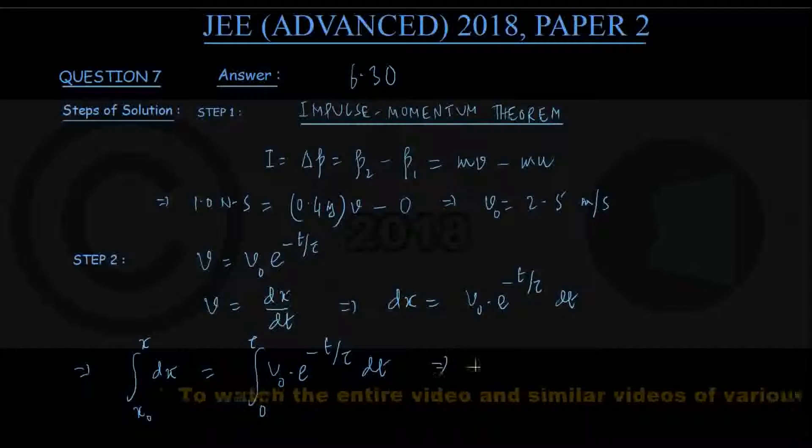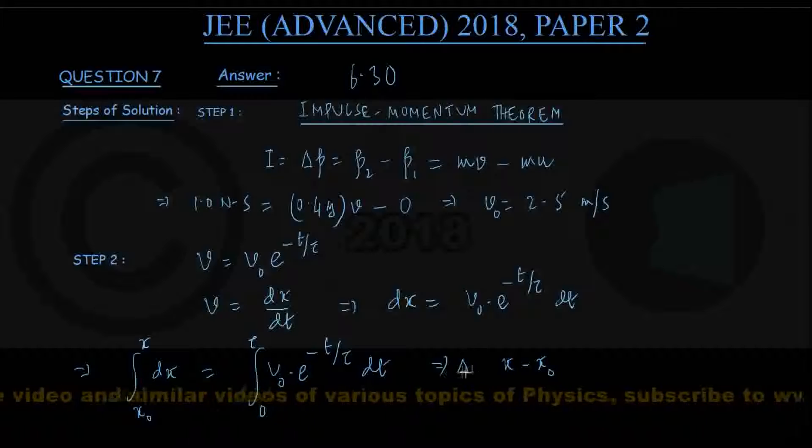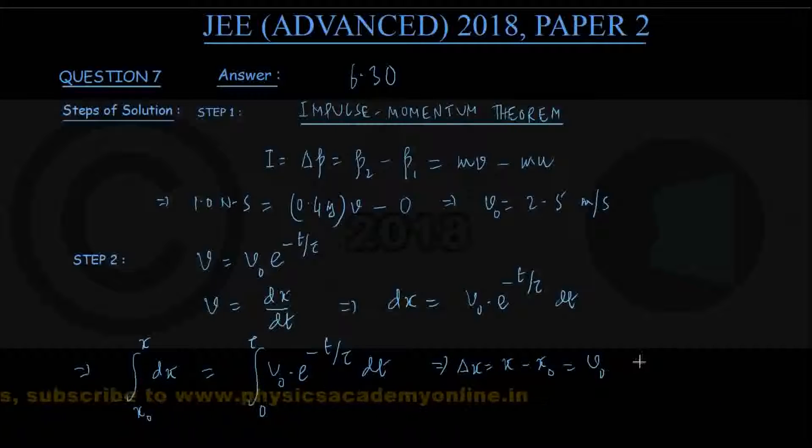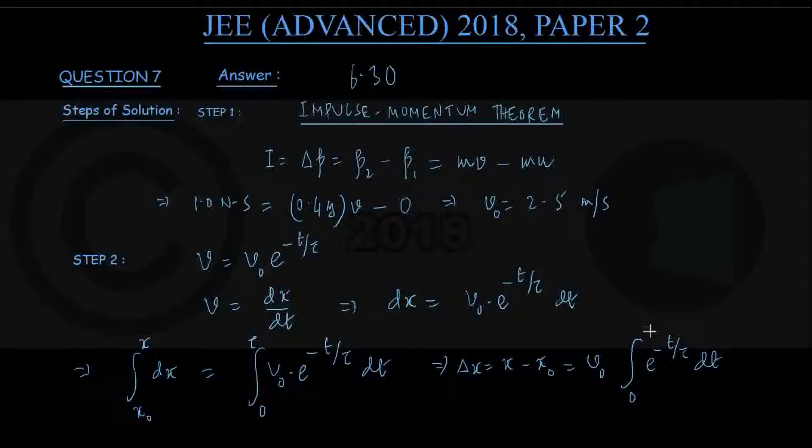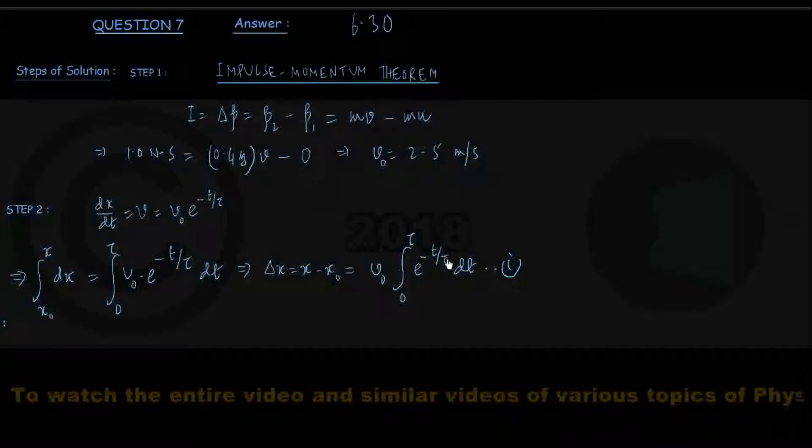As we integrate, left hand side coming out to be simply x minus x0, that is nothing but the displacement they are looking for. So delta x equals x minus x0, and this is v0 is a constant taken outside, times integration of e to the power minus t by tau dt between the limits 0 to tau. We call it equation number 1 for future reference. Since the value of v0 is already calculated and tau is given to be 4 seconds, there is not much physics left, what is left is a bit of integration.